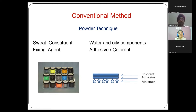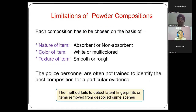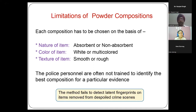This is available in various kit forms. Each kit costs about 80,000 to 1 lakh rupees in our country, as we import them. There are multiple compositions and the technique is simple, but you have to choose the proper composition for the proper surface — depending on whether it is absorbent or non-absorbent, what color it is, and whether the texture is smooth or rough. You need knowledge of the chemistry of the powder. Unfortunately, police personnel are not well-trained, and it fails to detect fingerprints on despoiled crime scenes.